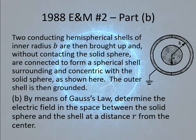Now, part B says that we surround the sphere with two hemispherical shells of inner radius B. They don't tell us the outer radius. It turns out we don't need it, and those are grounded. This is important. That means the potential there is zero. By means of Gauss's law, determine the electric field in the space between the solid sphere and the shell at radius little r from the center. So we're talking about little r is greater than or equal to A, less than or equal to B.